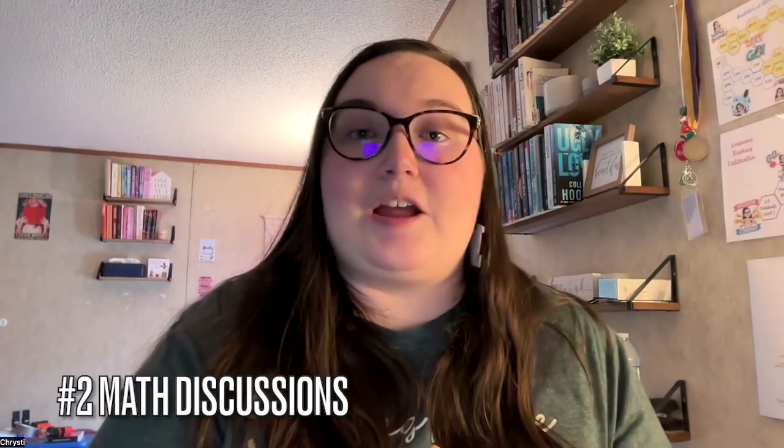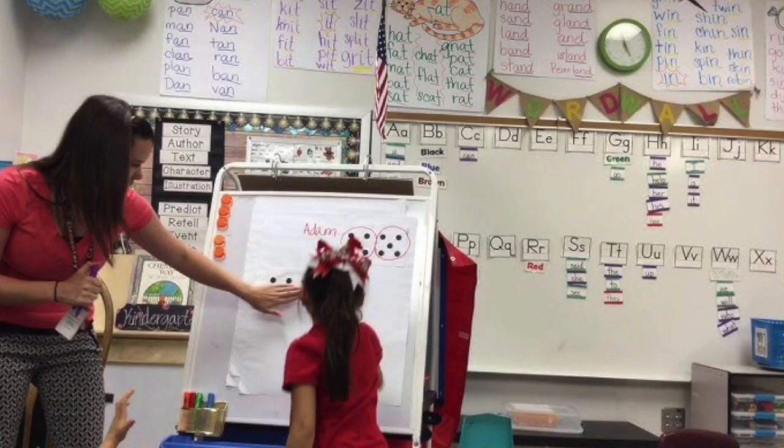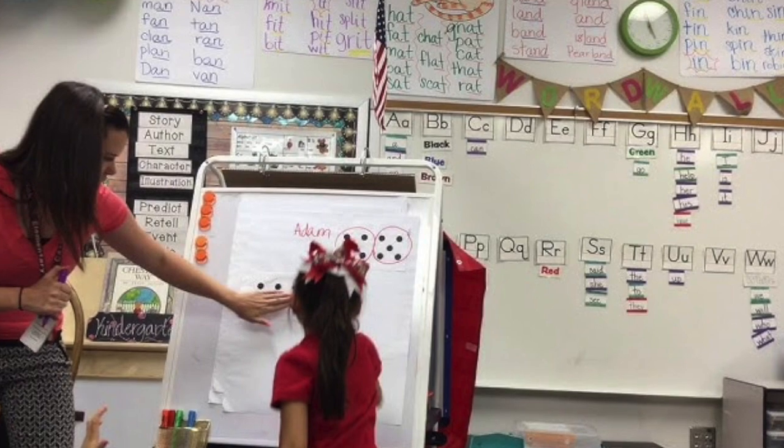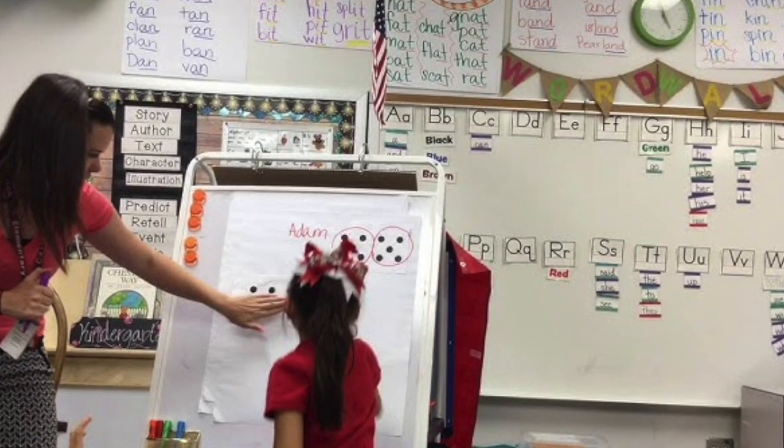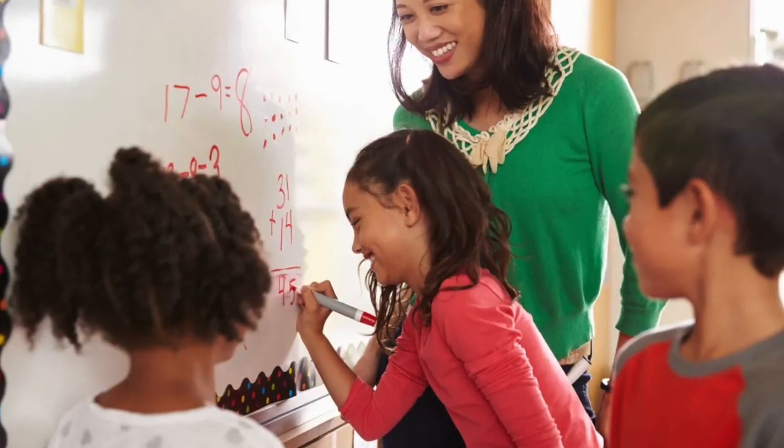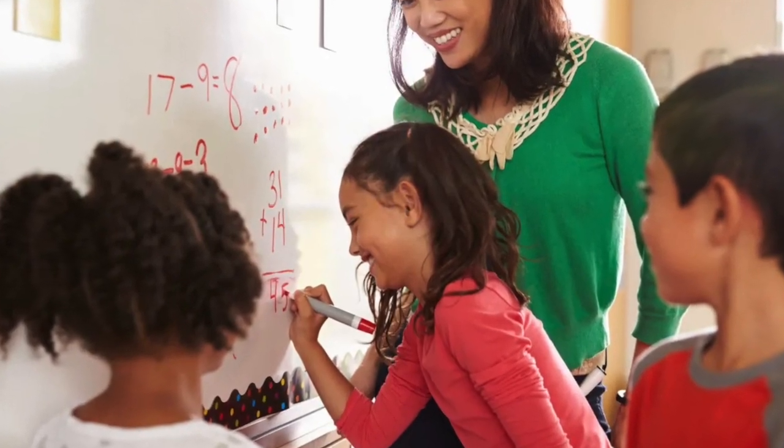The next strategy I highly recommend is having math discussions. This is important for academic language and math development in students. There are loads of different things that you can do. You can do some group work, some games, interactive games maybe. You can do some songs, movement, think-pair-share. There are lots of different activities. I also like equation time, where students write down an equation they think of and the class discusses it at length.